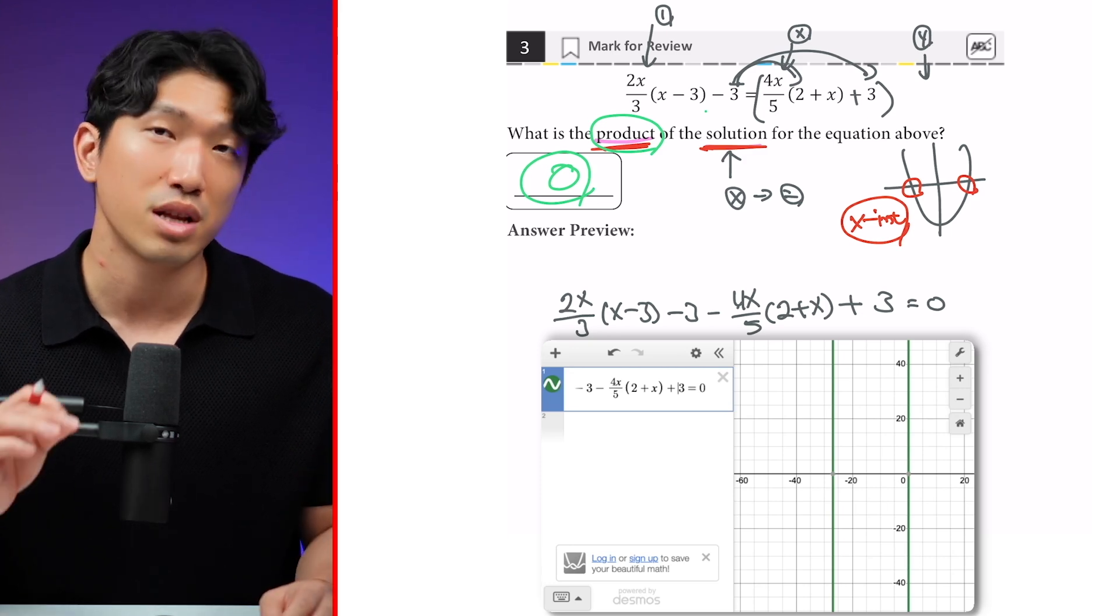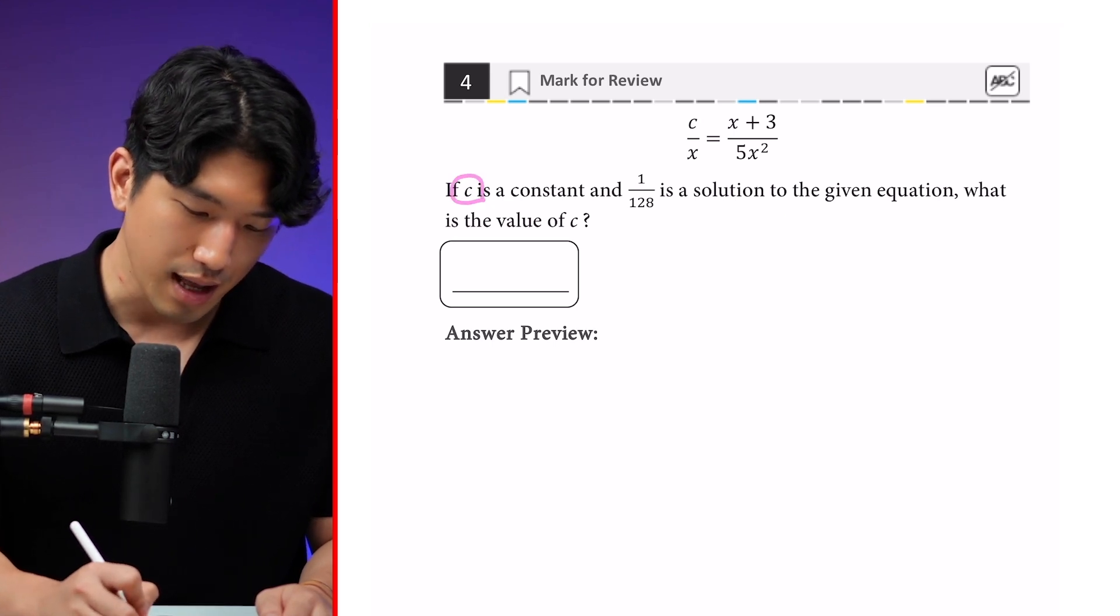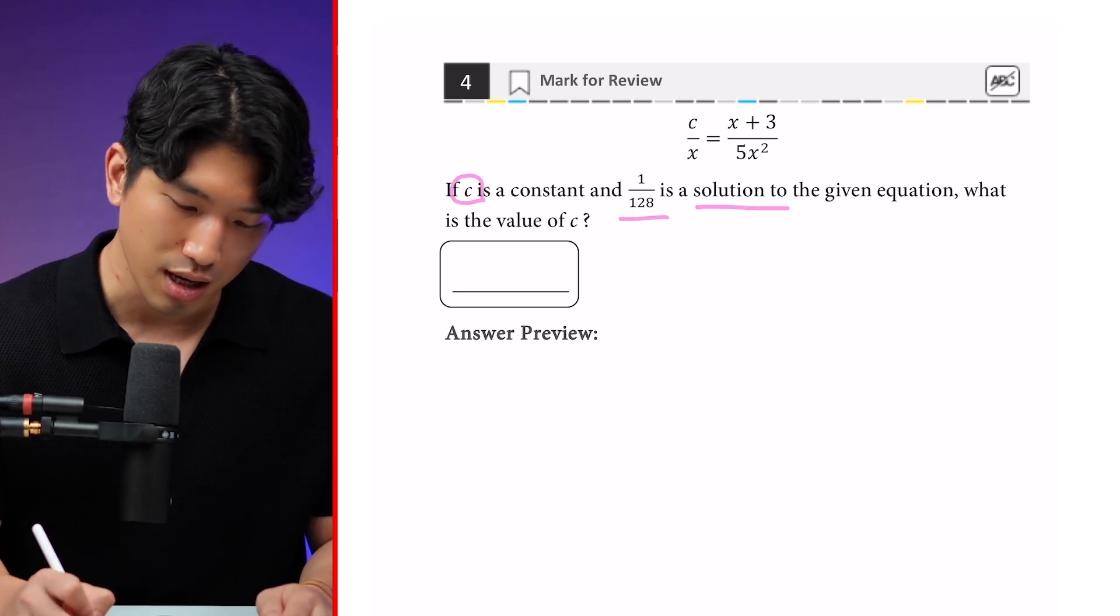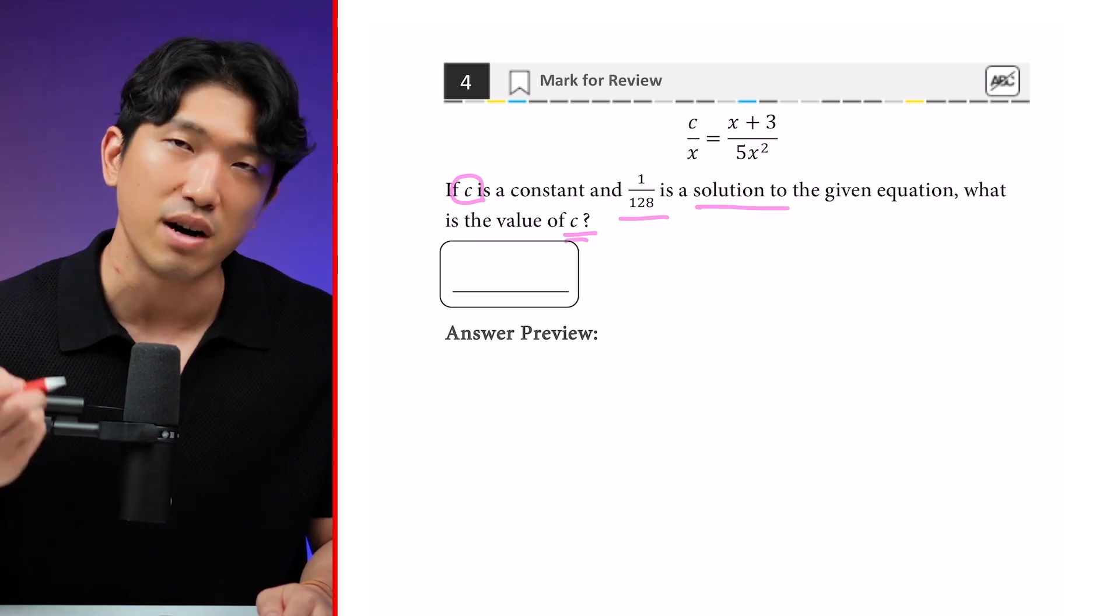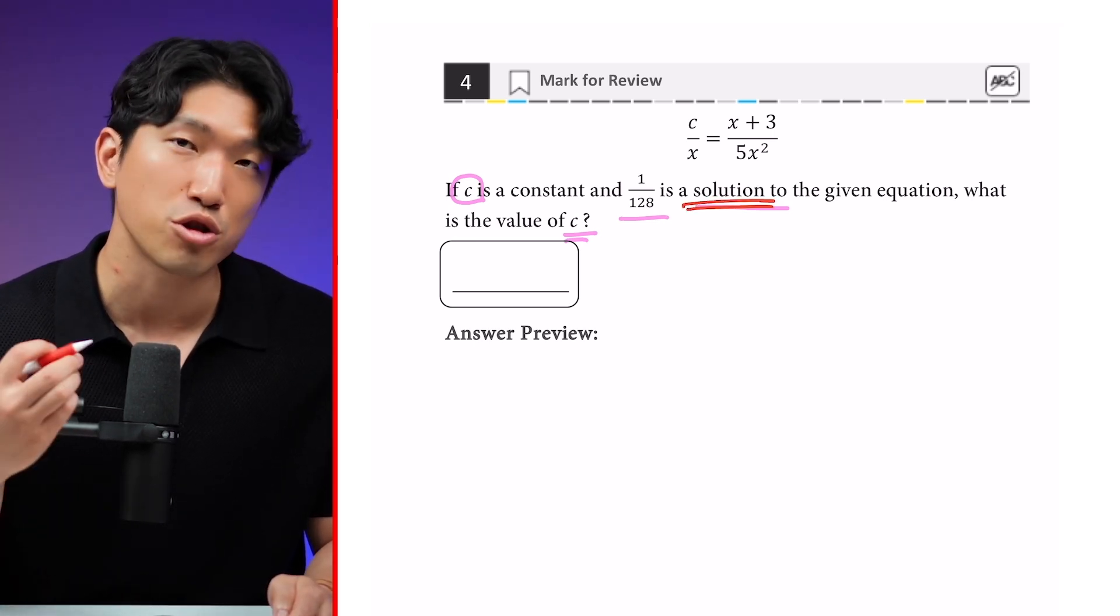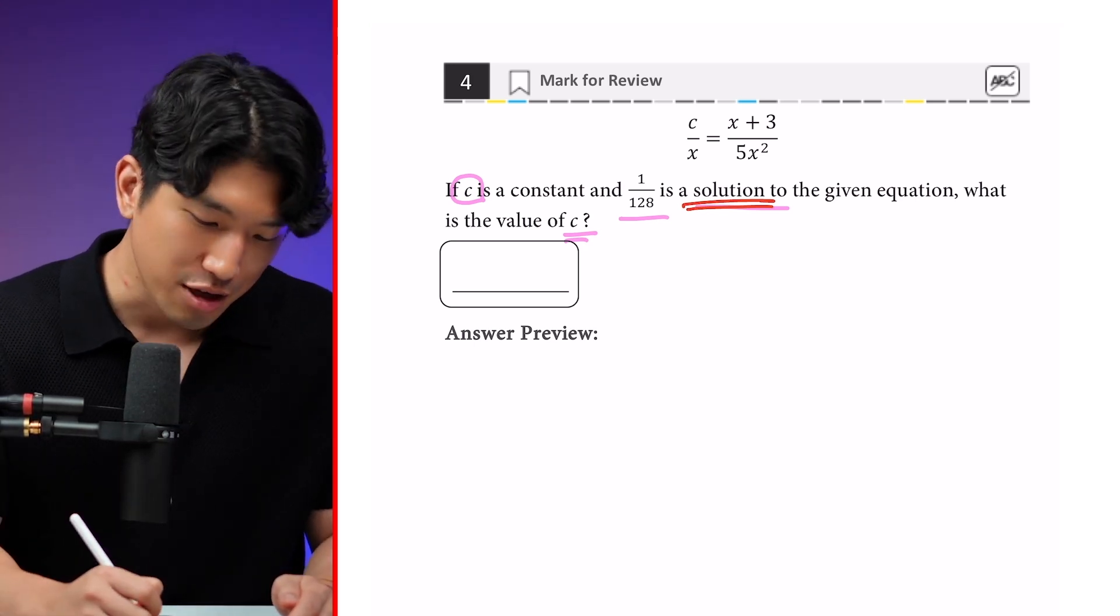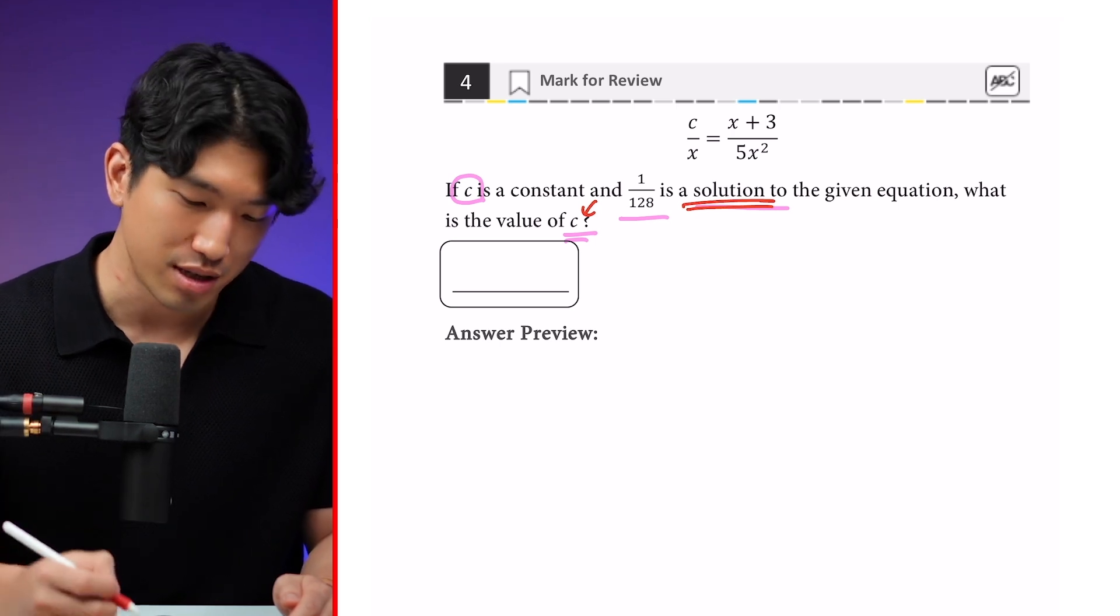If you got this one, let's move on to the last one. It's going to be a little wonky. So the question says, if c is a constant and 1/128 is a solution to the given equation, what is the value of c? So for this question, instead of having to find the solution, it already gives us what the solution is. And instead, it's asking us to find the value of c.